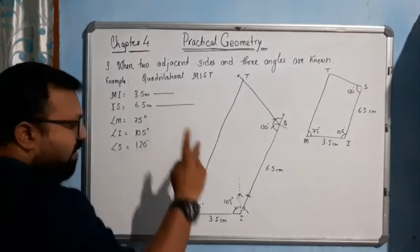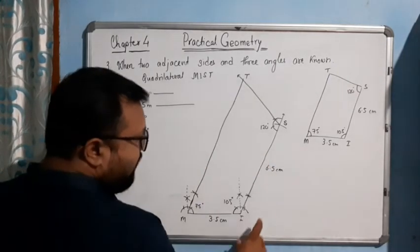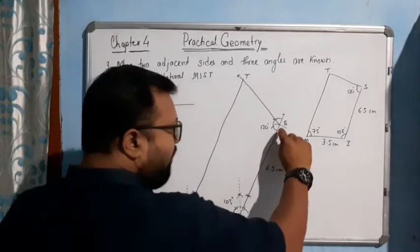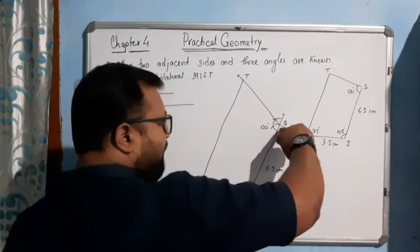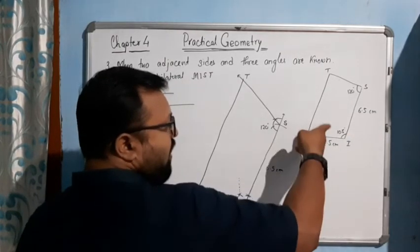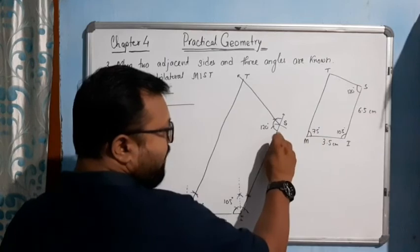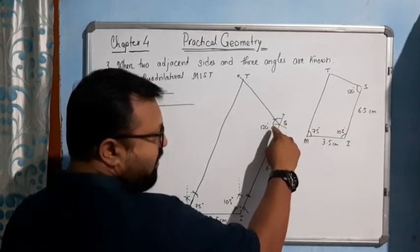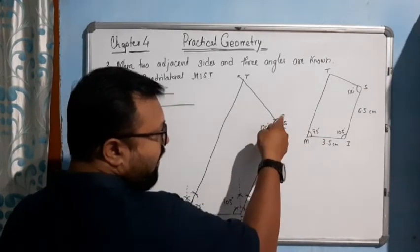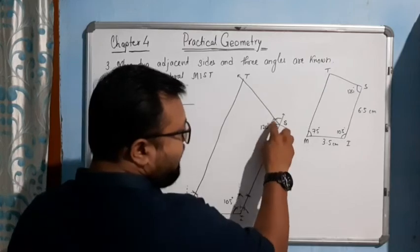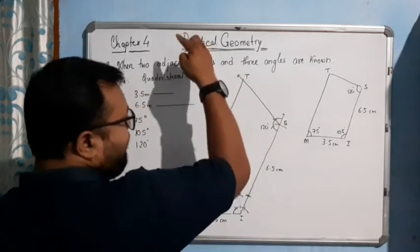Now measure IS equal to 6.5 cm and mark point S. From S, draw 120 degrees: place the pin, draw the arc, place the pin for another arc giving 60 degrees, place the pin again for another arc giving another 60 degrees — total 120. Join this line with an arrow.